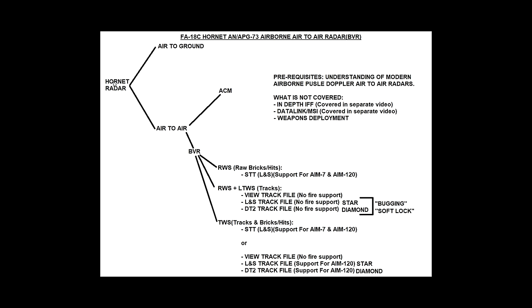Our Hornet radar is split into two: air-to-ground and air-to-air. From air-to-air it's split into two again: ACM and BVR. ACM — air combat manoeuvres — these are modes suitable for if your enemy is 10 miles or closer. BVR is suitable for if your enemy is 10 miles or further away.